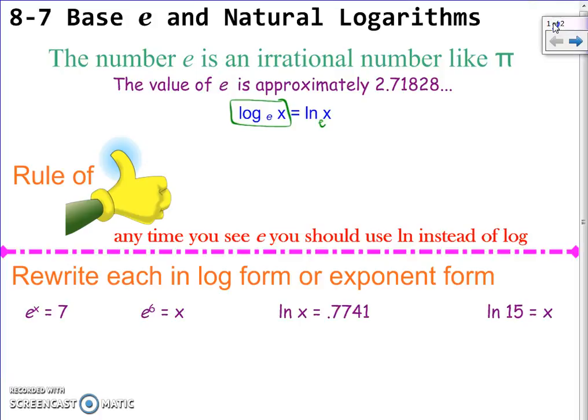We've got e to the x equals 7. How would we change this to log form? Log base e of 7 equals x, but if it's log base e, what do we write it as? We write it as ln instead. So we've got ln of 7 equals x. So this is just switching between exponent form and log form. We're not solving. We're not doing anything like that.